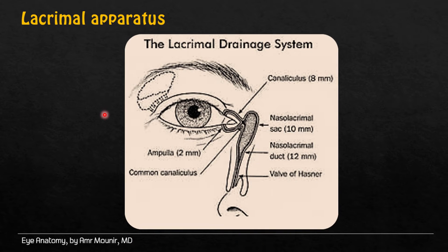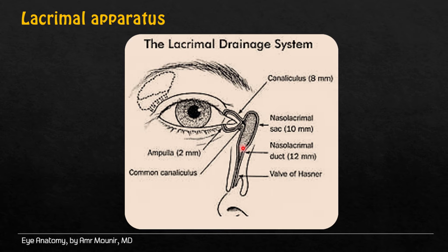The lacrimal drainage system is formed of lacrimal sac, lacrimal ducts which open in superior phonics, two pancti — superior and inferior pancti — two canaliculi, superior canaliculus and inferior canaliculus, which join each other at the main canaliculus, opening in the lacrimal sac, which drains secretions to nasal lacrimal ducts, which open in the lateral wall of the nose.